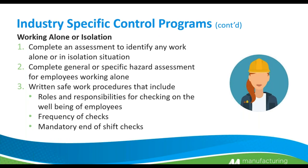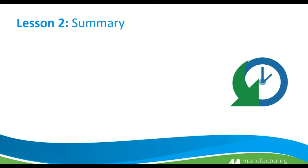Working alone or in isolation: complete a hazard assessment to identify any work involving working alone or in isolation, and complete general or specific hazard assessments for those employees. Safe work procedures must include roles and responsibilities for who checks on whom, how frequently that is done, and mandatory check-ins at the end of each shift. I have seen this section break down where someone thought someone else was going to do the safety check. The frequency of checks depends on the hazards of the work — working in an office is very different from working on a milling machine — and the mandatory end-of-shift check is often missed.